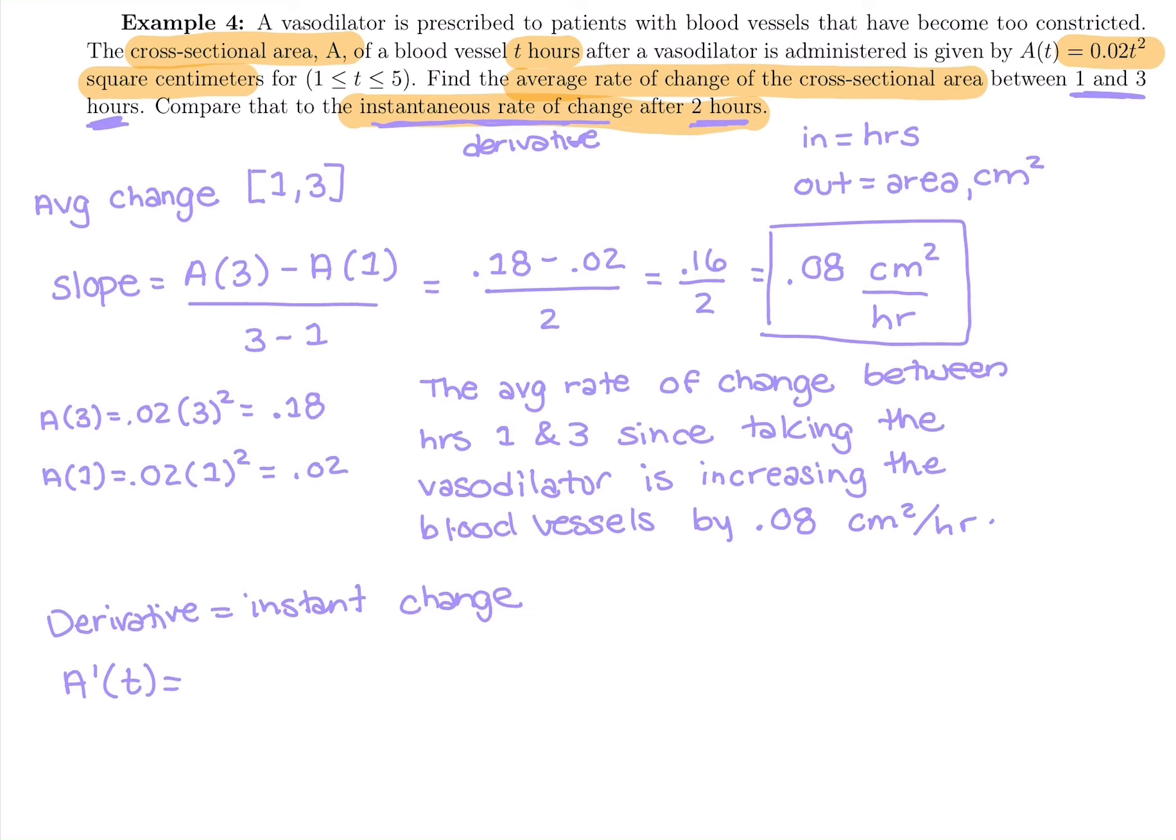So looking at this function, our A of t is 0.02 t squared. So I'm going to bring down that power. It's going to be 0.02 times 2, which is 0.04. And then we have t to the first power. So it says compare it to the instantaneous rate of change at two hours. So A prime of two, it should be somewhere near that 0.08 because that's on the interval for the average rate of change. And that's a pretty small interval, so it should be pretty accurate. And if we do 0.04 times 2, replacing our t in there, we really do get 0.08 centimeters squared per hour.